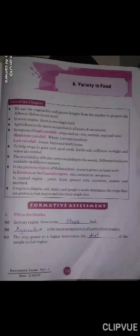Now turn your page and remove page number one zero four. We will skip question one and do question number two. Circle the odd man out in the given food items. You have to circle the answer only; you don't have to write the reason here.